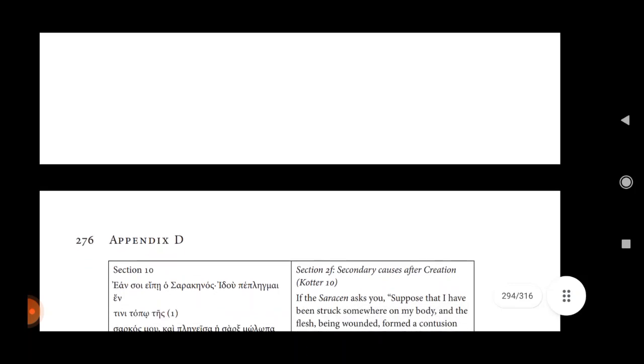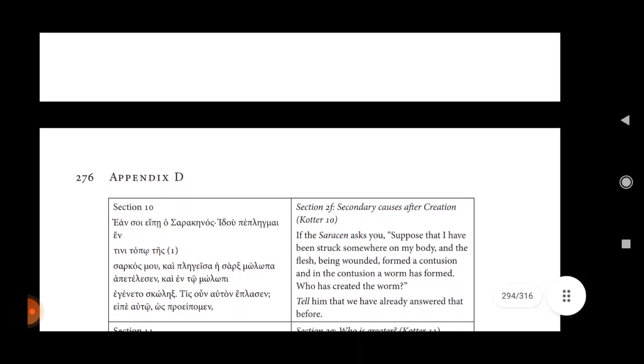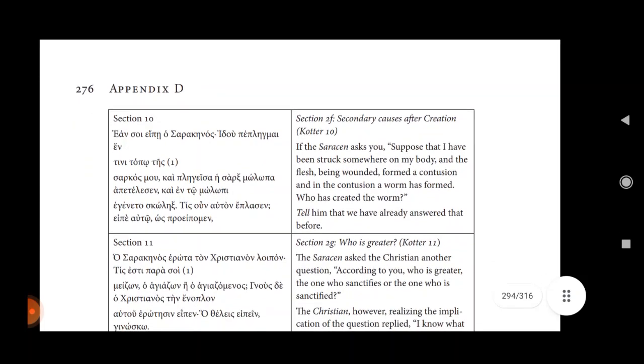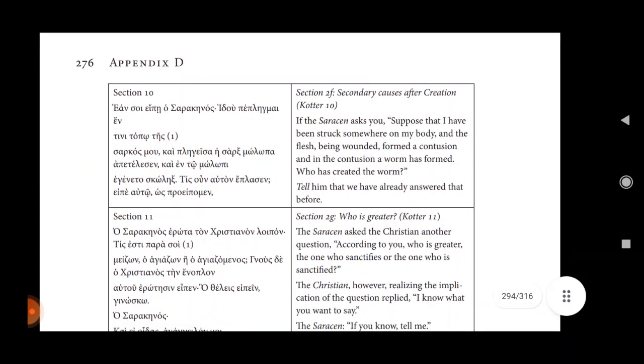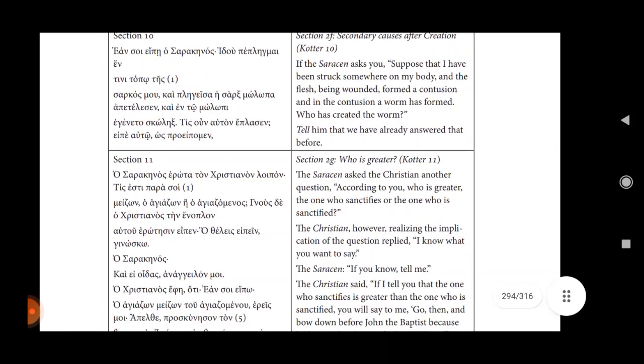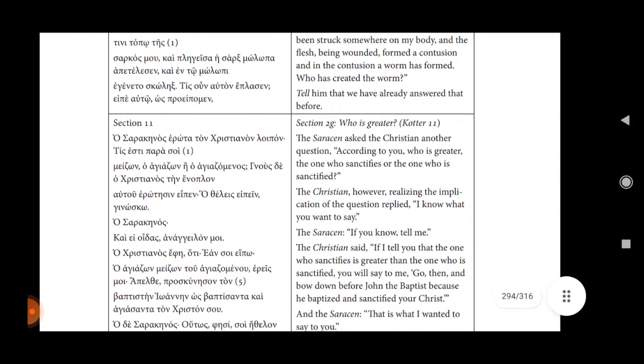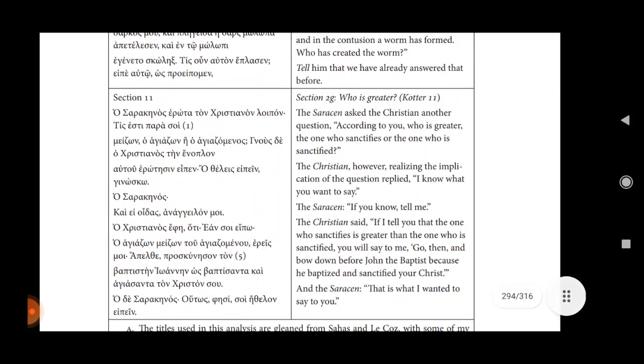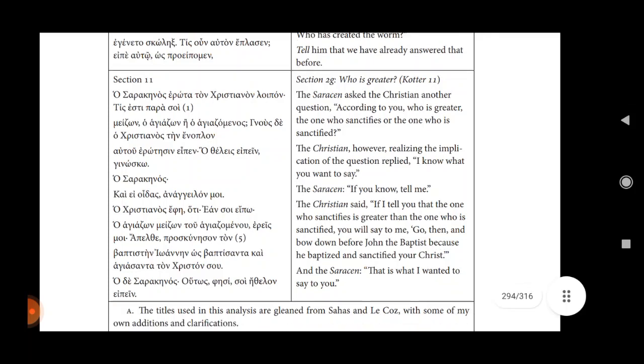Section 12, Secondary causes of the creation. Quotex 10. If the Saracen asks you, suppose that I have been struck somewhere on my body, and the flesh being wounded from a contusion and in the contusion a worm has formed. Who has created the worm? Tell him that we have already answered that before.